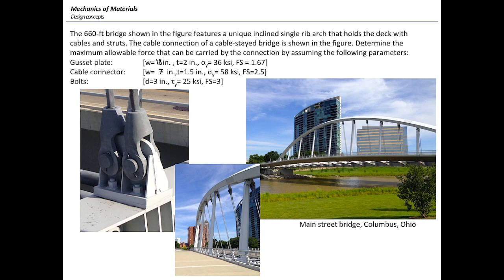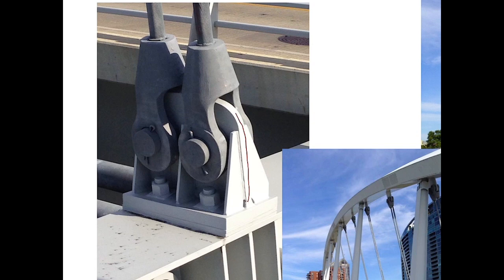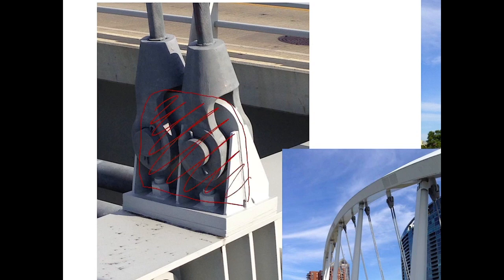I want you to design part of this — not the entire bridge, just focus on the connection where those cables connect to the deck, which is shown here. The gusset plate is the part connecting those cables to the bottom. The gusset plate is 18 inches wide, 2 inches thick, and will yield at 36 KSI. The required factor of safety is 1.67.